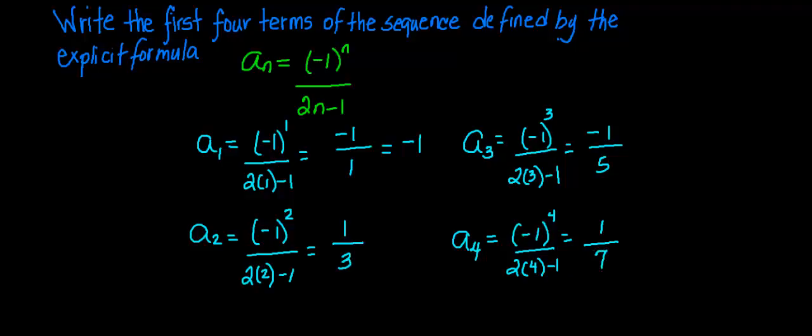And there you have the first four terms of the sequence, which we can list as negative 1, 1 third, negative 1 fifth, and 1 seventh. One thing I want to mention about this sequence is that this term,